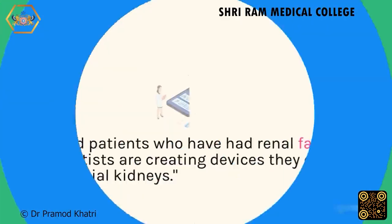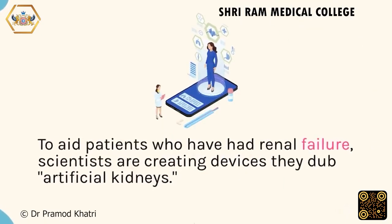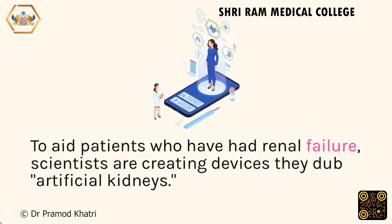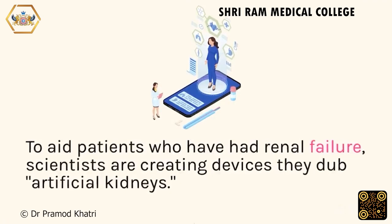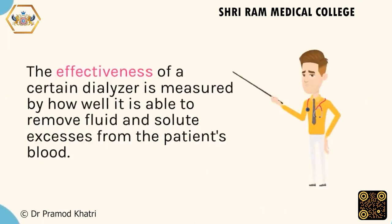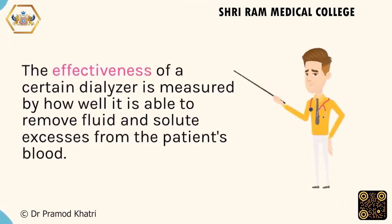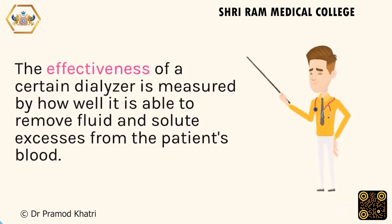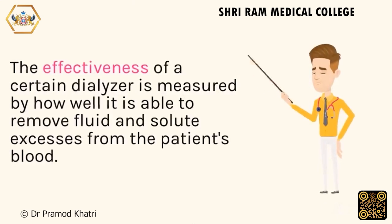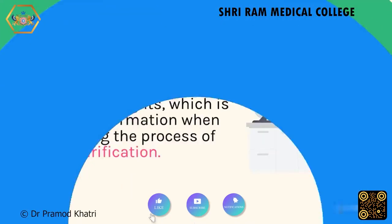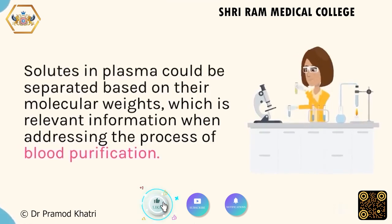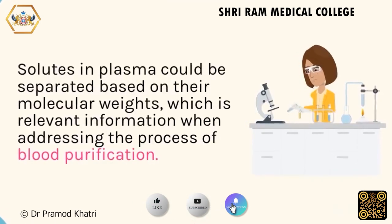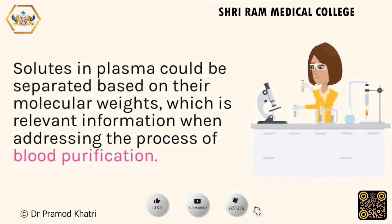To aid patients who have had renal failure, scientists are creating devices they dub artificial kidneys. The effectiveness of a certain dialyzer is measured by how well it is able to remove fluid and solute excesses from the patient's blood. Solutes in plasma could be separated based on their molecular weights, which is relevant information when addressing the process of blood purification.